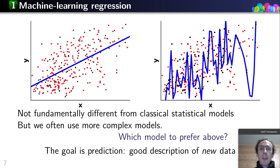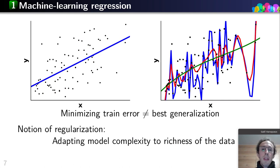If I take new data and look at the error, the straight line will give me less error than the wiggly line. Our goal is prediction — we want a good description of new data. Minimizing the training error doesn't give the best generalization. In practice, I will have to make trade-offs, and this is the notion of regularization, which is crucial to machine learning. The idea is to adapt model complexity to the richness of the data — for instance, preferring smoother lines over wiggly ones, as these are more likely to generalize well.